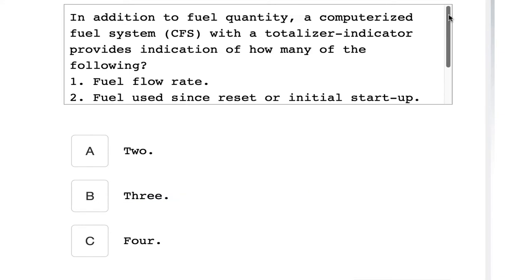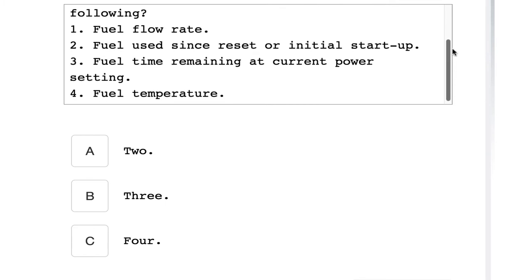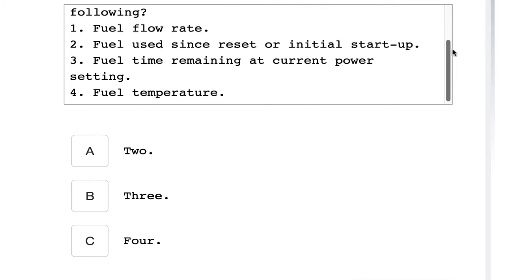In addition to fuel quantity, a computerized fuel system which is a totalizer indicator provides indication of how many of the following: one, fuel flow rate; two, fuel used since reset or initial startup; three, fuel time remaining at current power setting.